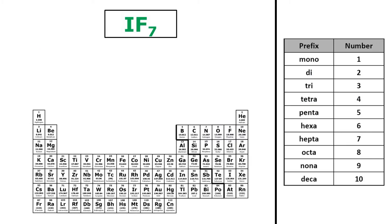So my next binary covalent compound is IF7. So I is iodine, so I'll write iodine without changing its name. F is fluorine, but remember I changed the ending of that to -ide, so fluorine becomes fluoride, and now I need my prefixes.